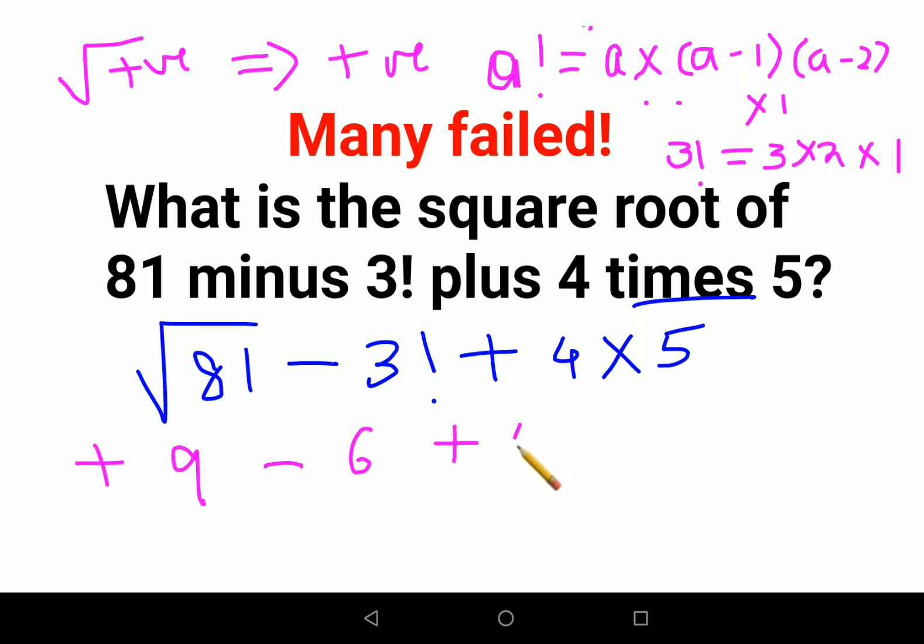Plus 4 into 5 is 20. So 9 minus 6 is 3, plus 20 - that gets you 23.